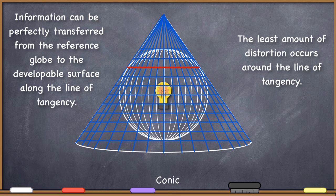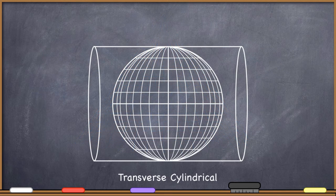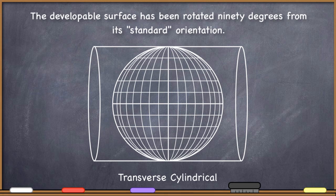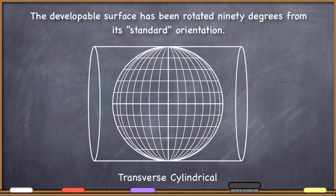We will return to that idea in just a moment. What I want to do now is introduce you to a few other terms you may need to know about projections. The first word is transverse. Here is a transverse cylindrical projection — transverse just means that I rotate the developable surface 90 degrees from its standard orientation. Notice how I had the cylinder going up and down touching the equator in the other representation. Well, if I rotate it 90 degrees, I have a transverse cylindrical projection — you can imagine putting the light bulb in the middle and creating a new projection.